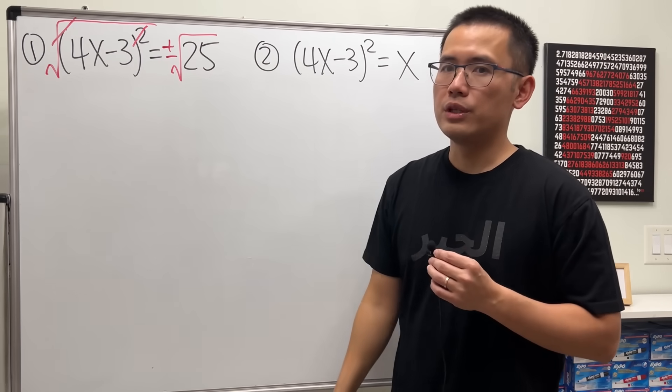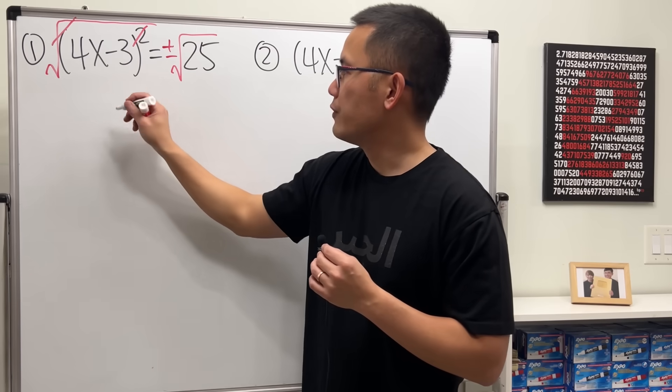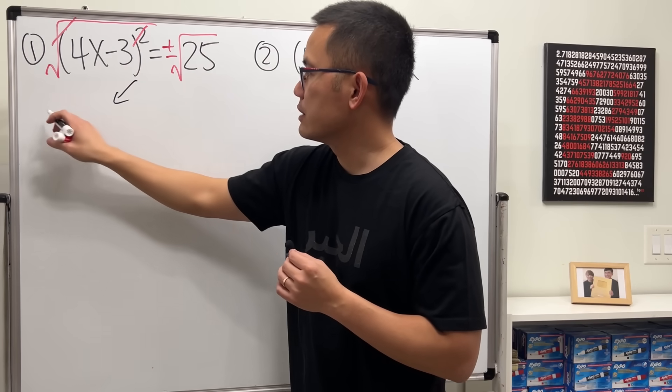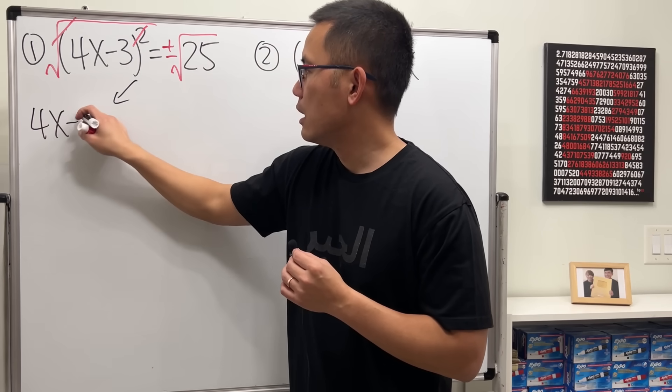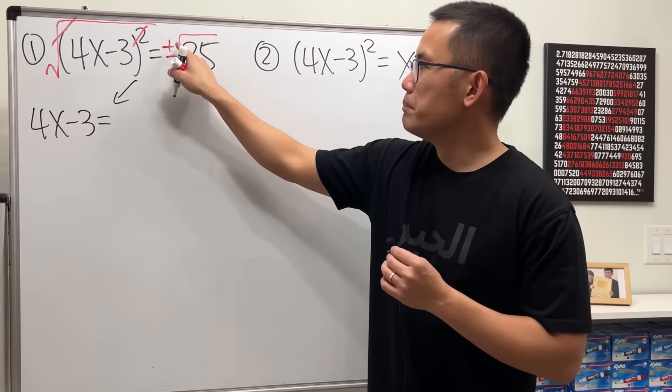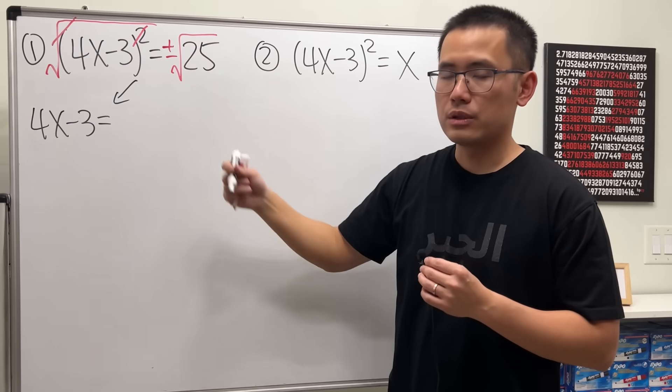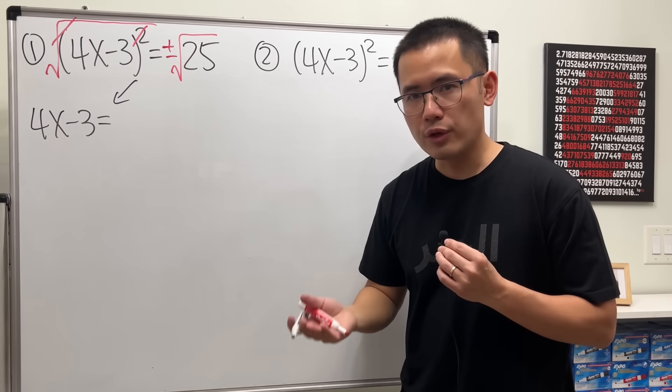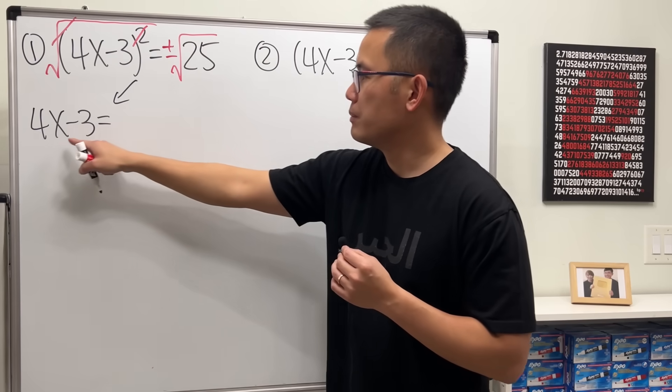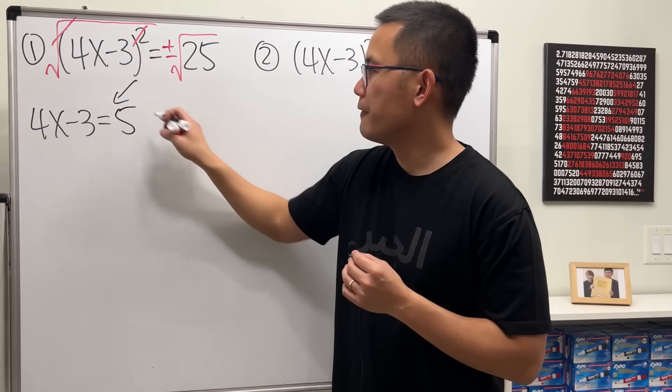And don't forget, there is a plus or minus. And we will end up with two equations. What we do is, we first work out the inside. Make it equal to positive square root of 25. And because we can work that out, so you do it. Square root of 25 is 5, so make this equal to 5.